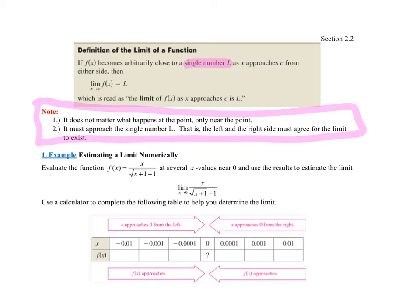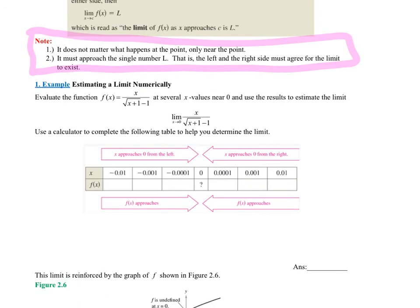Let's look at example one — estimate a limit numerically. Evaluate the function f of x equals x over the square root of x plus one minus one, at several x values near zero, and use the results to estimate the limit as x approaches zero of x over the square root of x plus one minus one. The first thing to notice: can we just plug in the number? If we plug in zero, we'd have zero over — zero plus one is one, square root of one is one, one minus one is zero — so we'd have zero over zero, which is the indeterminate form. That means the function is undefined at that point.